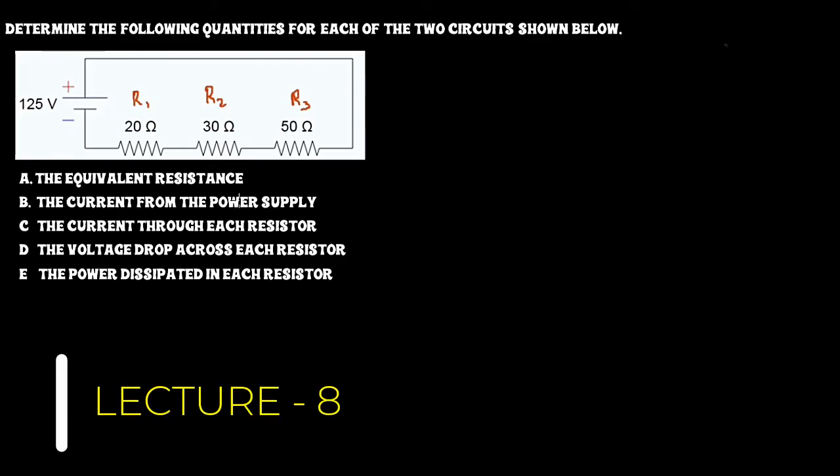In this lecture we are going to solve a small problem for the circuit given below. We have three resistors and a voltage source, and we've been given five problems: equivalent resistance, current from the power supply, the current through each resistor, voltage across each resistor, and the power dissipated in each resistor.